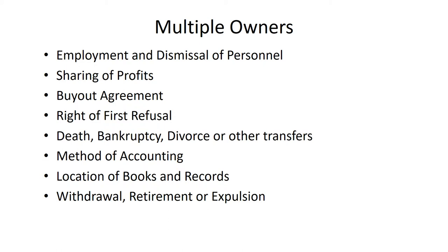Method of accounting: there are two basic ways to keep books — the cash method or the accrual method. CPAs will usually tell you that the accrual method is the most accurate, but in a small business it's usually much easier to use the cash method. It makes sense for the owners to discuss how they're planning to keep records and make sure they're in agreement. They should also discuss where the books and records will be kept — ordinarily in the office, in a location where all owners have access to inspect or examine them when they choose.